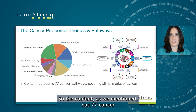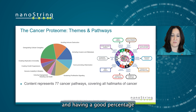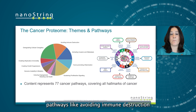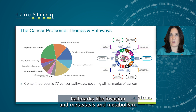The content has 77 cancer pathways covering all of those hallmarks of cancer, with a good percentage of content relevant to IO-relevant pathways like avoiding immune destruction and tumor-promoting inflammation, as well as other really important hallmarks like invasion, metastasis, and metabolism.